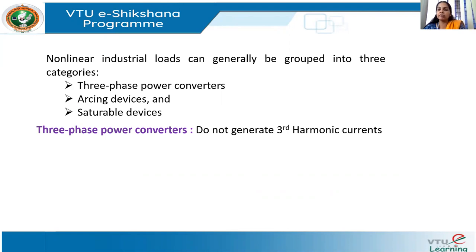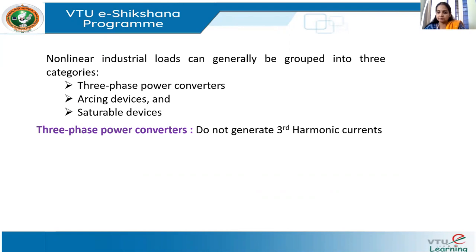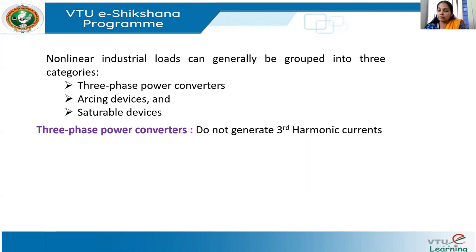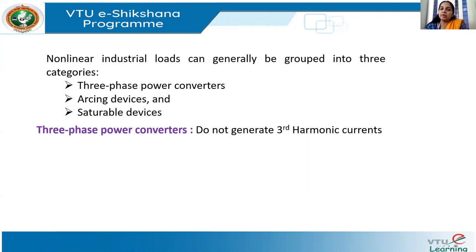In the last class, we saw single-phase power supplies as an example of harmonic sources in commercial loads. What is the difference between three-phase and single-phase loads when talking about harmonics? Three-phase converters differ from single-phase converters mainly because three-phase converters do not generate third harmonic components. This is a major advantage, since most problematic harmonic components include third harmonics. However, three-phase converters still have harmonics from higher frequency components, just fewer compared to single-phase converters.